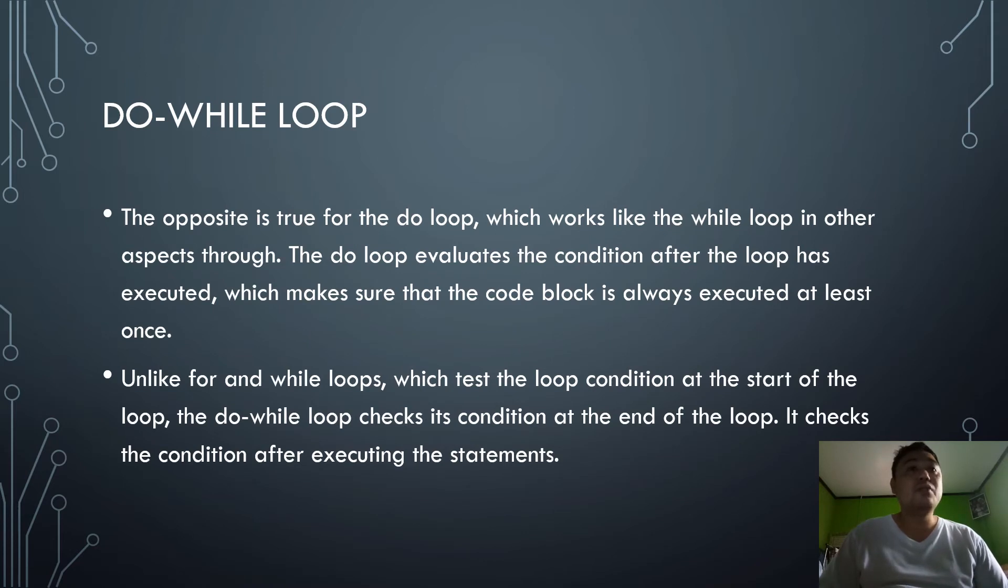Number two is do while loop. This is the opposite. The do loop is which looks like the while loop in other aspects, but the do loop evaluates the condition after the loop has executed, which makes sure that the code block is always executed at least once. Unlike for and while loops, which test the loop condition at the start of the loop, the do while loop checks its condition at the end of the loop. It checks the condition after executing the statements.